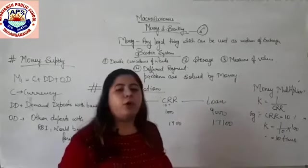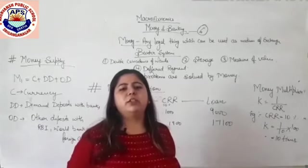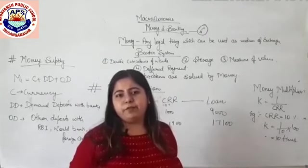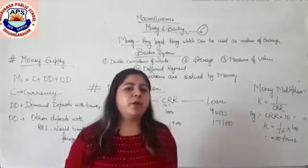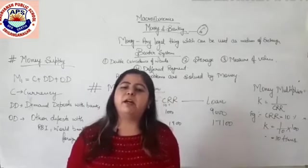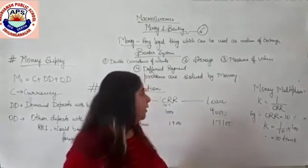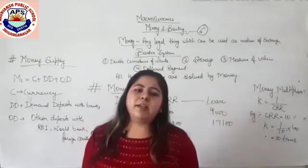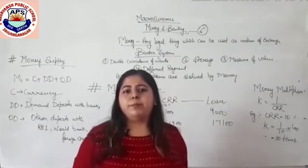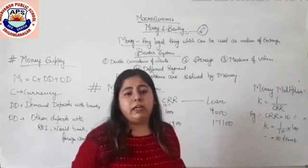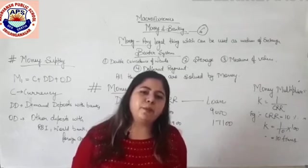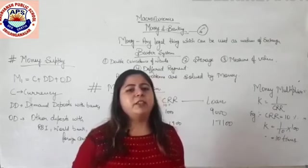The second problem in the barter system was storage. Because goods were commodities, storing so many of them was very difficult in terms of space. With money, you only need to store money and buy as per your requirement. The third problem is measure of value — in the barter system, measuring a commodity's value was difficult. How can we exchange a car for a cow? But today we know the price of a car and can decide which one to purchase as per our budget.